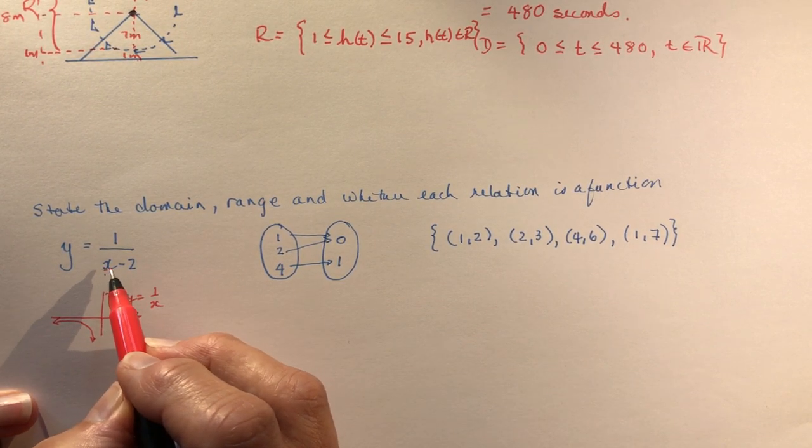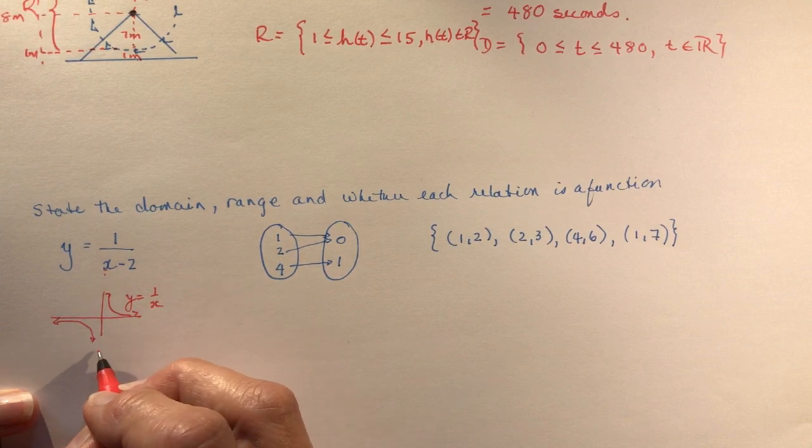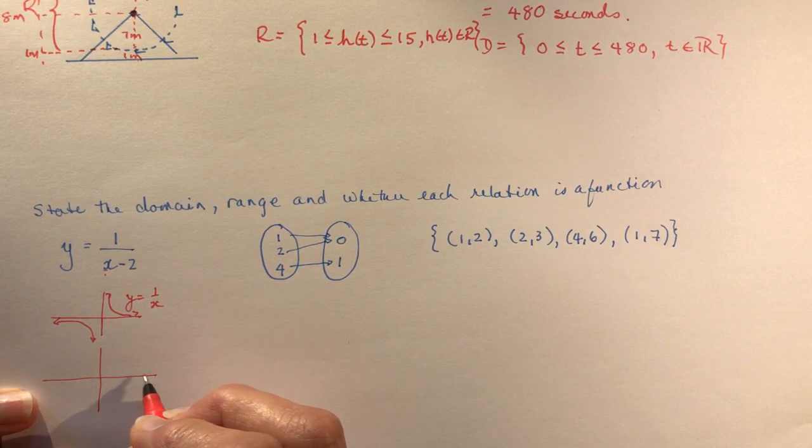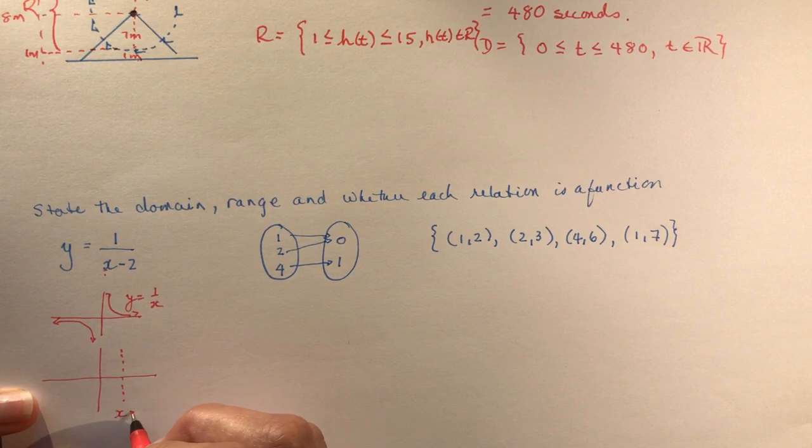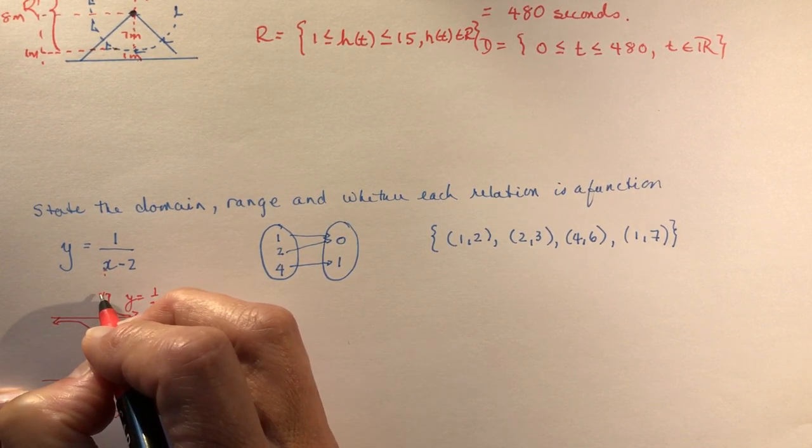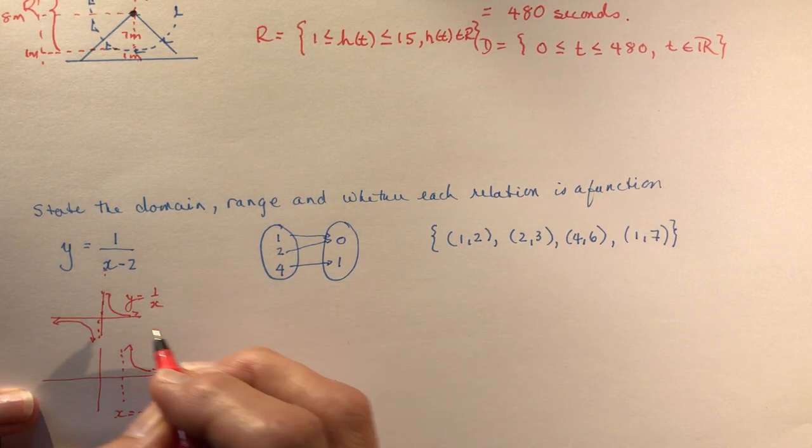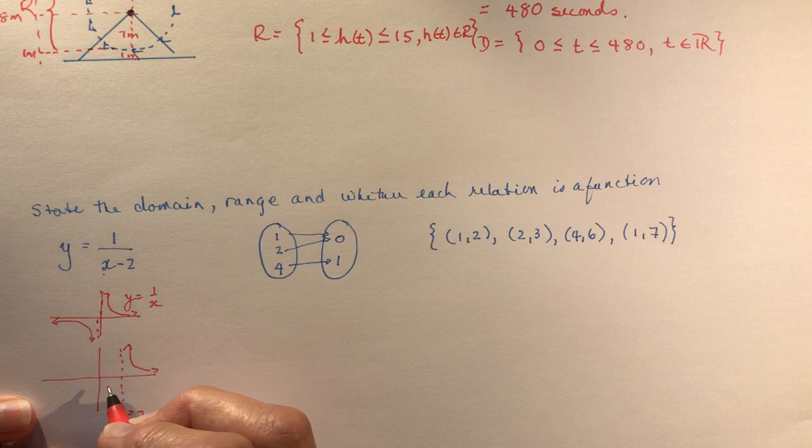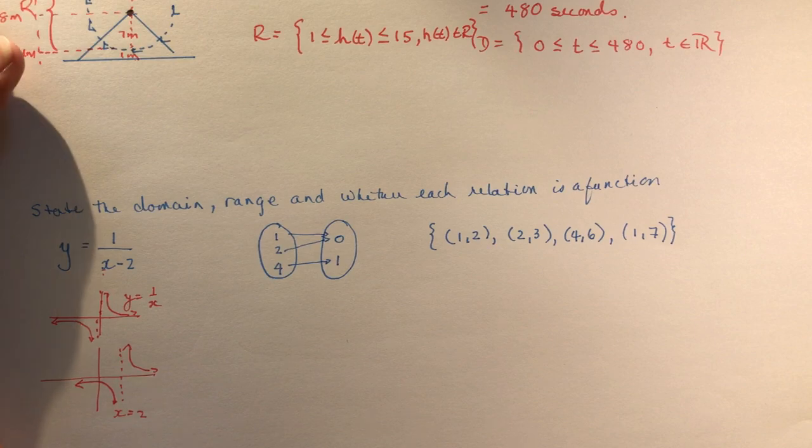So x not equal to two means I've moved it over here. So x equals two is my asymptote, vertical asymptote. Here it was zero, x equals zero, y equals zero. So we have this one here and we have the other one over here. So is that a function? Yes.